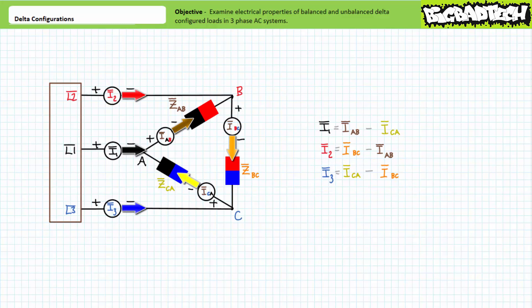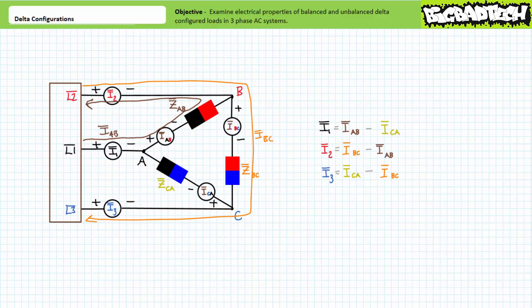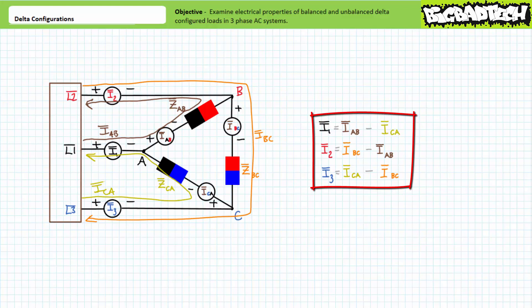Consider the larger picture. Current IAB travels through the ammeter on line one left to right into node A, through load impedance ZAB from A to B, out of node B, and through the ammeter on line two right to left. Current IBC travels through the ammeter on line two left to right, into node B, through ZBC from B to C, out of node C, and through the ammeter on line three right to left. Current ICA travels through the ammeter on line three left to right, into node C, through ZCA from C to A, out of node A, and through the ammeter on line one right to left. The important takeaway is that unlike Y configurations, line current does not equal load current for delta configurations. Line current is in effect the combination of two currents exhibiting a relative phase shift, and is always greater than load current with a phase shifted offset.